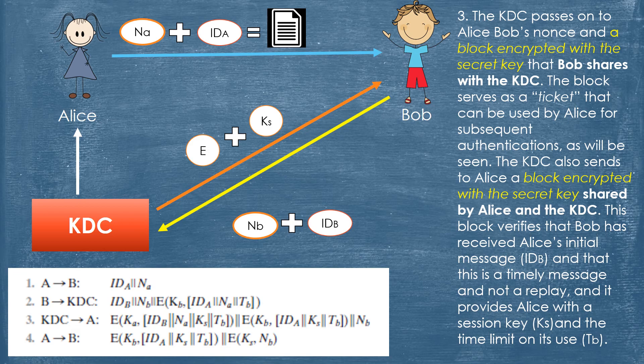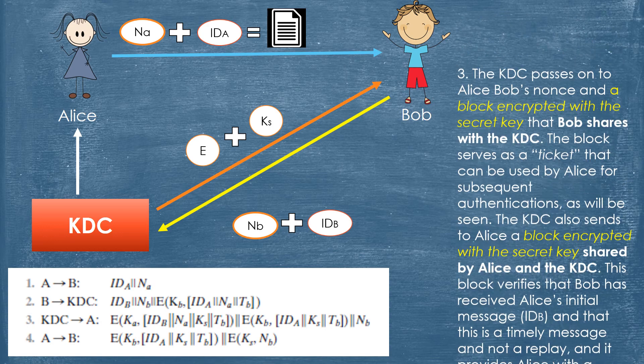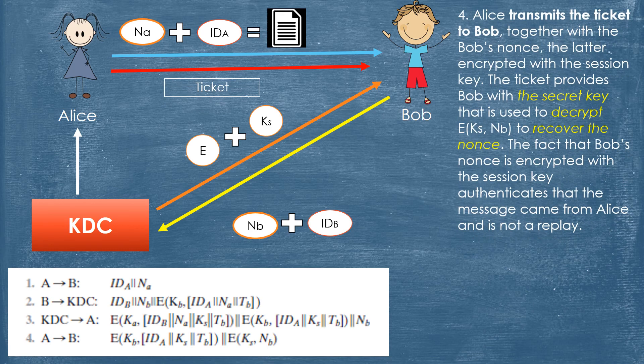The block serves as a ticket that can be used by Alice for subsequent authentications. The KDC also sends to Alice a block encrypted with the secret key shared by Alice and the KDC. This block verifies that Bob has received Alice's initial message and that this is a timely message and not a replay. It also provides Alice with a session key and the time limit on its use.